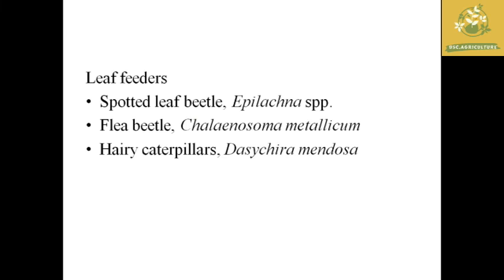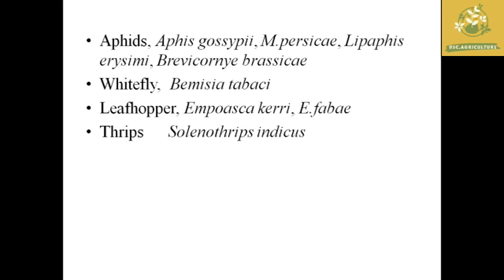Some other leaf feeders of potato include the spotted leaf beetle, flea beetle, and hairy caterpillars. Other important sucking insects in potato include aphids, whitefly, leafhopper, and thrips. Their scientific names include: aphids — Aphis gossypii, Aphis elephantus, and Brevicoryne brassicae; whitefly — Bemisia tabaci; leafhoppers — Empoasca kerri and Empoasca fabae; and thrips — Scirtothrips indicus.